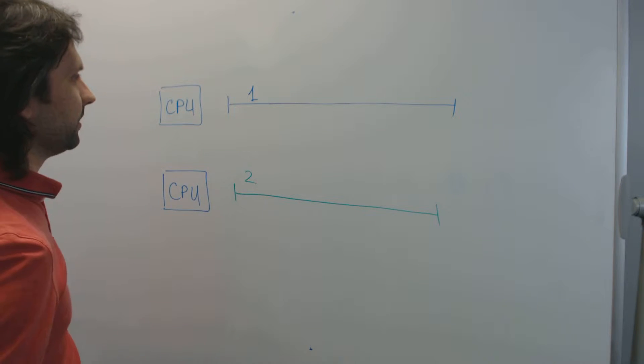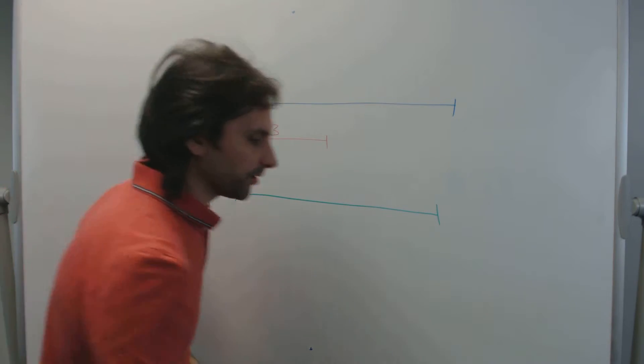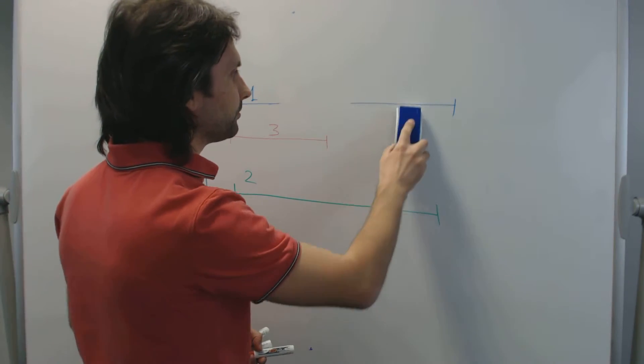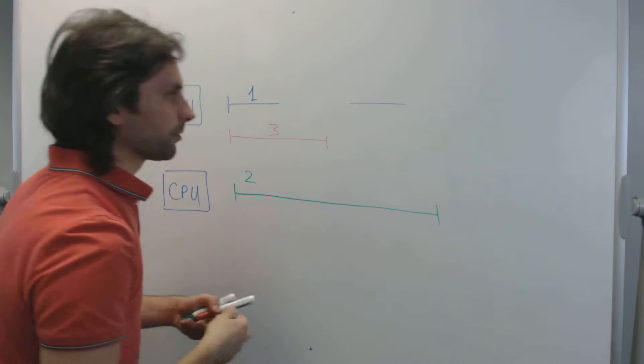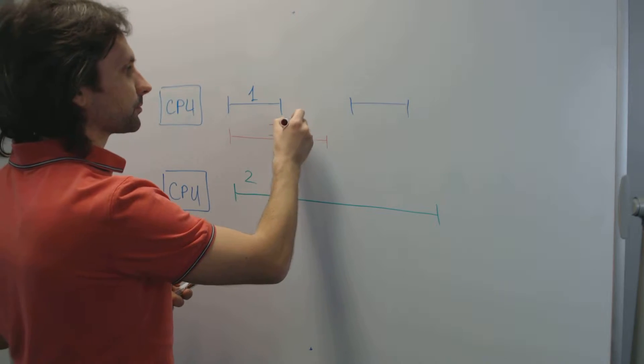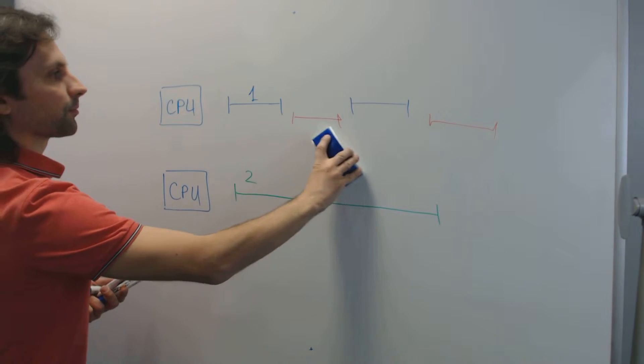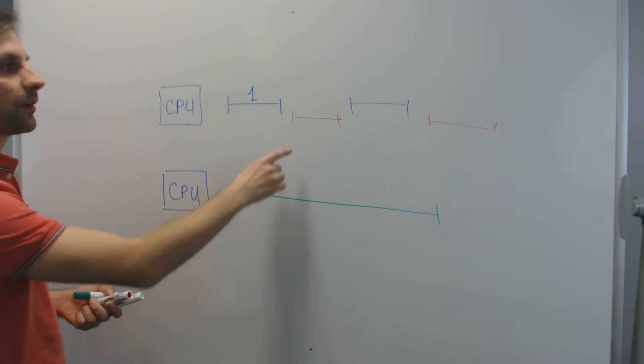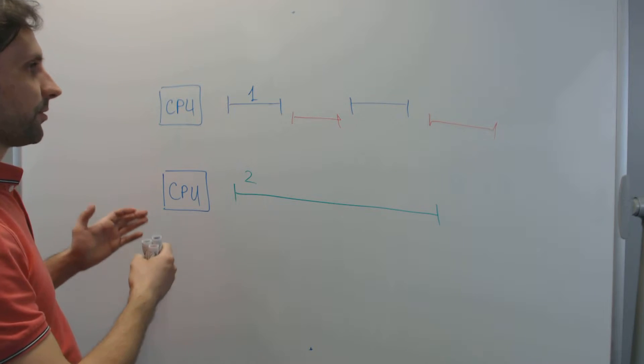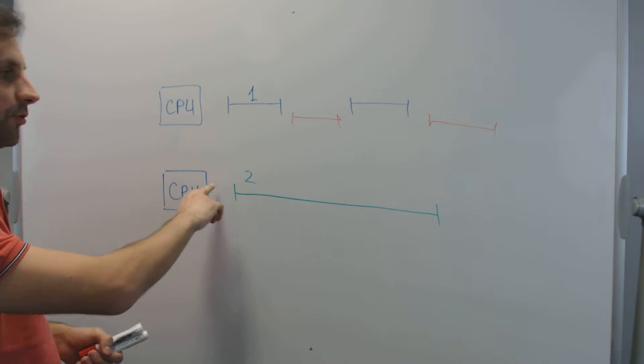What happens if we add more threads? Again, the third one. In that case, one of the CPUs will have to start doing context switches and pay the performance price for those context switches. So again, not a good idea. We don't like this, we like this. So we can say already that the number of threads, the ideal number of threads, equals the number of CPUs available.